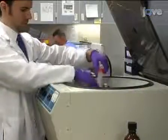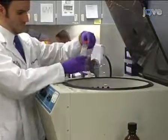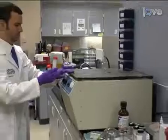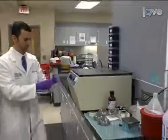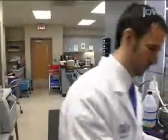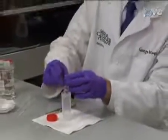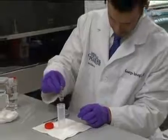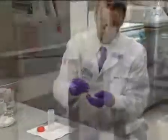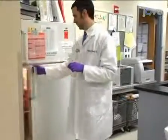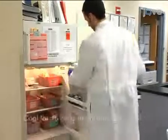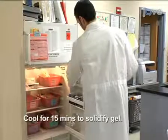When the centrifugation is complete, remove the tubes gently and vertically from the centrifuge, taking care not to disturb the thin sediment layer of cells at the bottom. Using forceps, remove the smaller glass tube vertically without disturbing the sediment layer of specimen cells. Finally, refrigerate the small glass tube in a vertical position for 15 minutes to cool and solidify the gel.